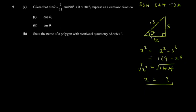Another guideline: sine and cosine are always less than one, so 12/13 looks correct. But the problem is you're not dealing with theta less than 90°— you're dealing with theta greater than 90°. So that changes things.